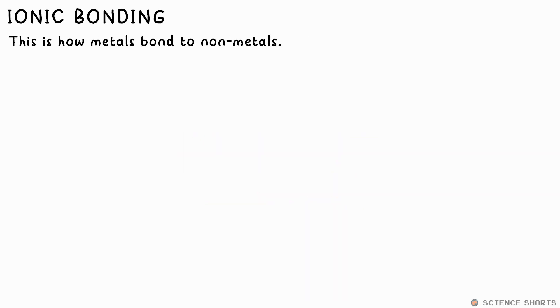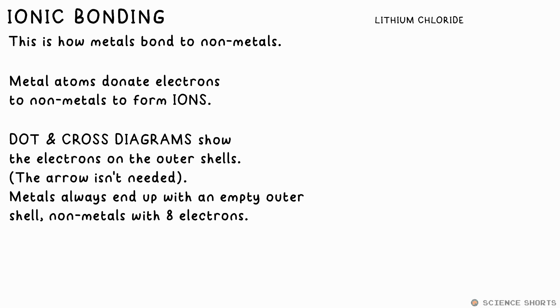Metals bond to non-metals through ionic bonding. Like we said, a group 1 metal needs to lose an electron, while a group 7 atom needs to gain one. It's a match made in heaven. For example, a lithium atom donates or loans its outer electron to the chlorine atom. We can draw a dot and cross diagram to show where the electrons end up. We only need to draw the outer shell for each of these. Don't forget to put brackets and the charge of the ions too.